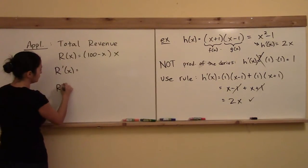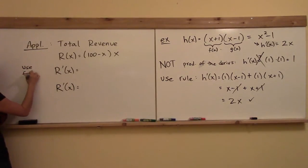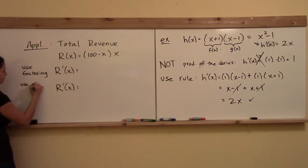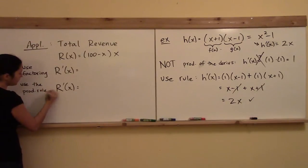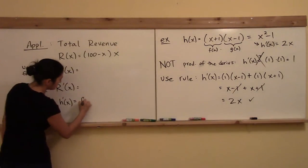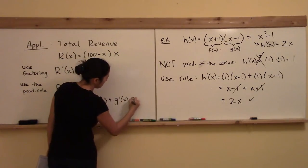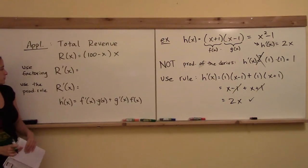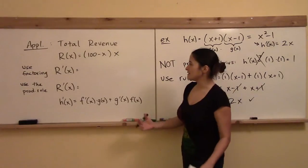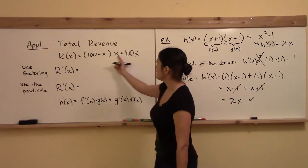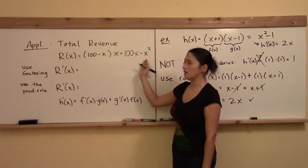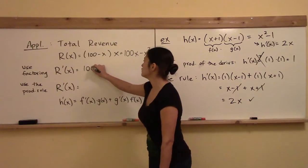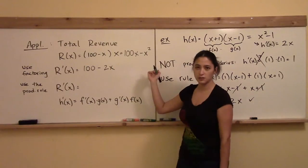Let's take this derivative in two ways to check our work. First, factor through: r of x equals 100x minus x squared. Then by the power rule, constant multiple, and sum and difference rules, the derivative is 100 from the 100x term, minus 2x from the minus x squared term. So r prime of x equals 100 minus 2x.